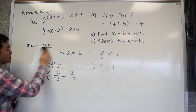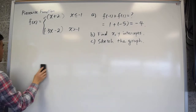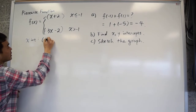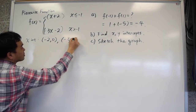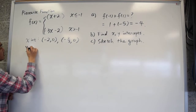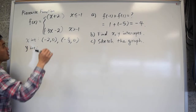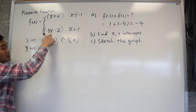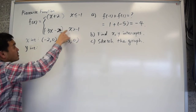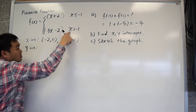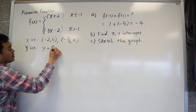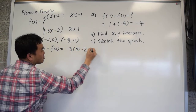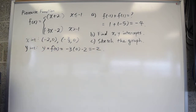So the two x-intercepts are negative 2 comma 0 and negative 2 thirds comma 0. For the y-intercept, set x to 0. Should you plug 0 into the first or second formula? The second, because 0 is bigger than negative 1. So y equals f of 0: negative 3 times 0 minus 2 equals negative 2. The y-intercept is 0 comma negative 2.